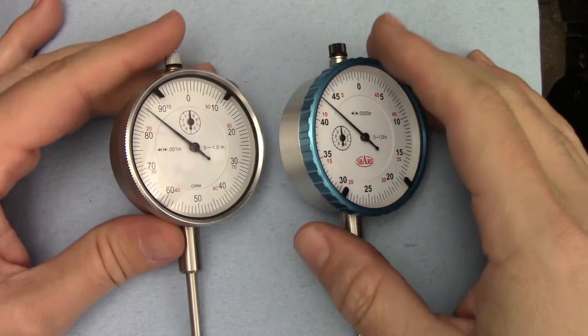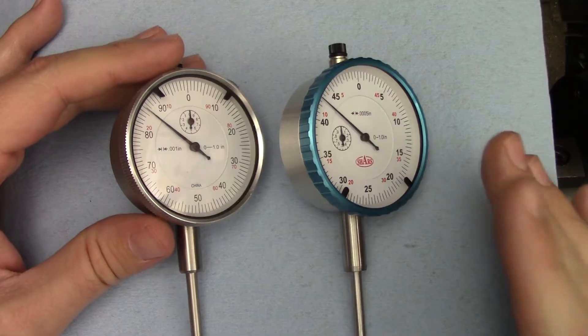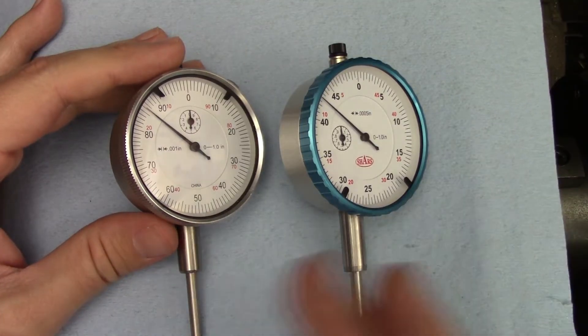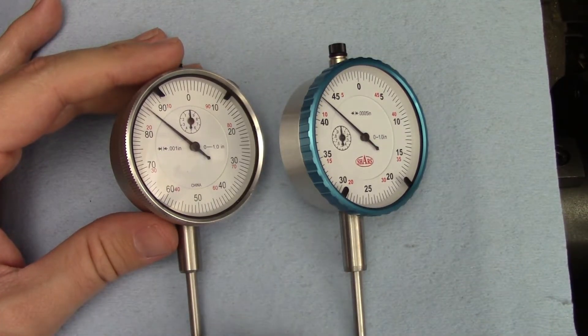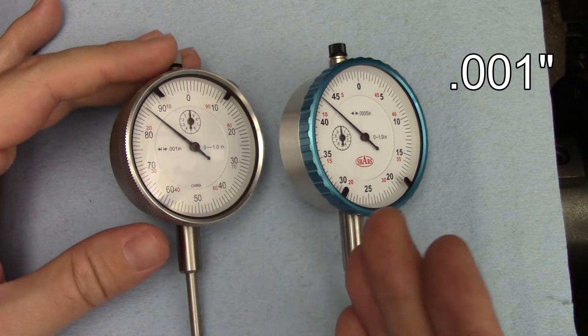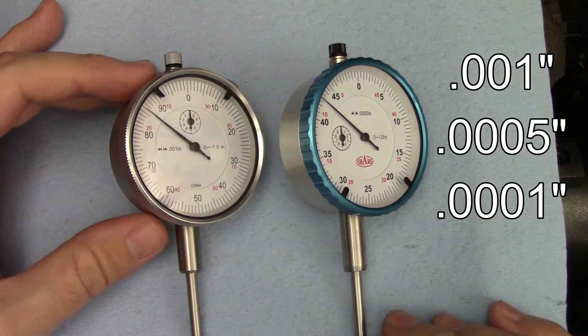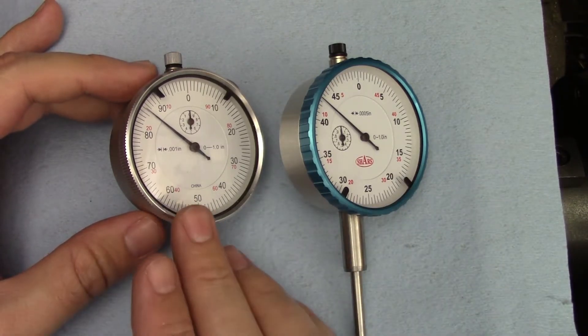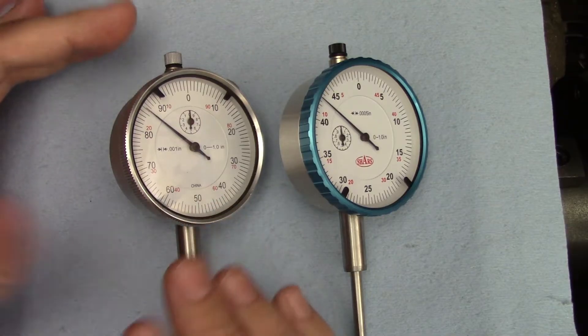The type of indicator doesn't necessarily tell you what the graduations will be. Drop type dial indicators like this could be graduated in thousandths, half thousandths, or tenths of a thousandth, although thousandths is definitely the most common setup for this particular flavor.